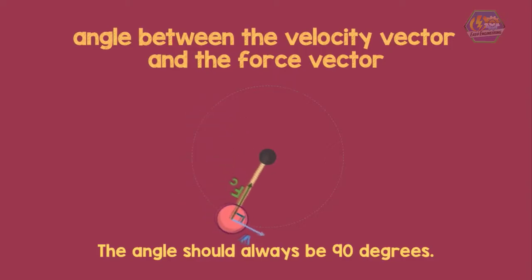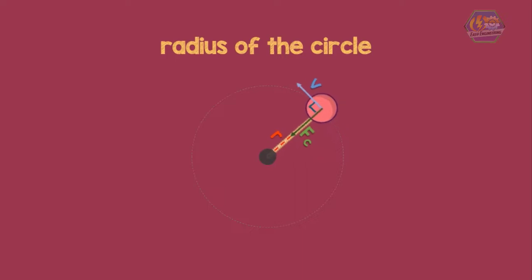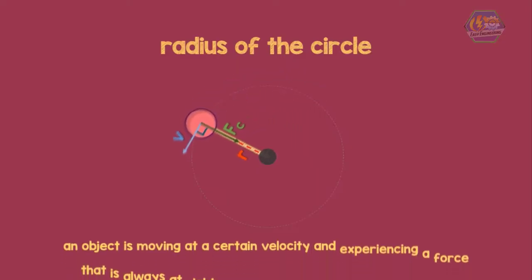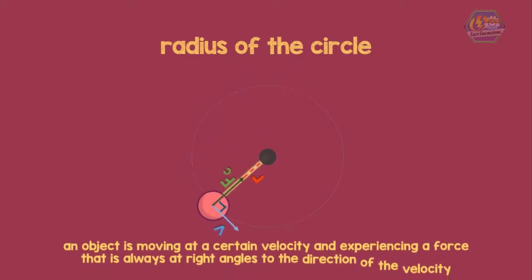Now, the ball is tied to a string, right? This string is a representation of the radius of the circle. All these factors give you the definition of something undergoing circular motion. And that is, an object is moving at a certain velocity and expressing a force that is always at right angles to the direction of the velocity. That is why the object is moving in a circle.